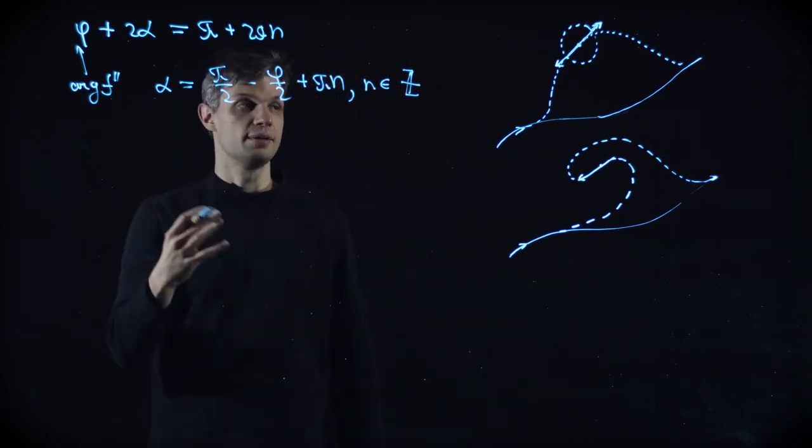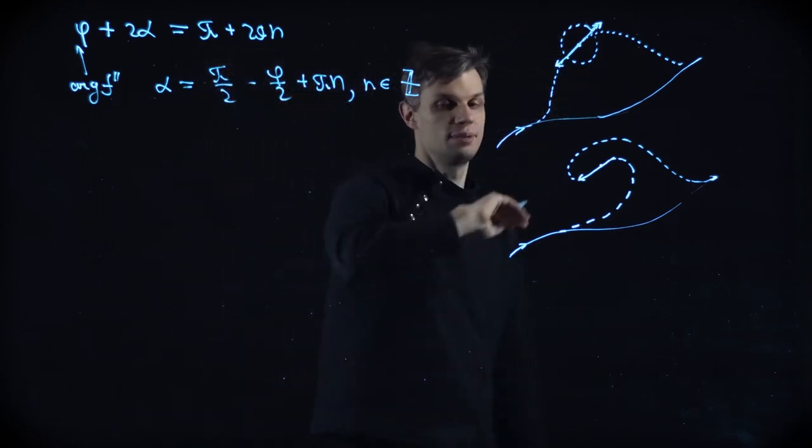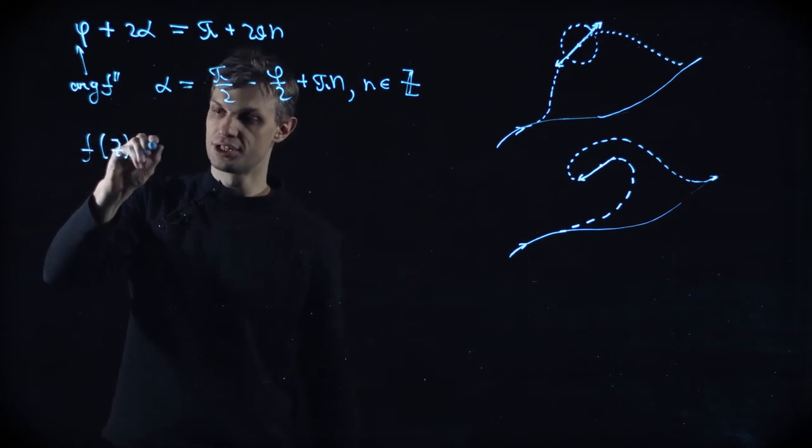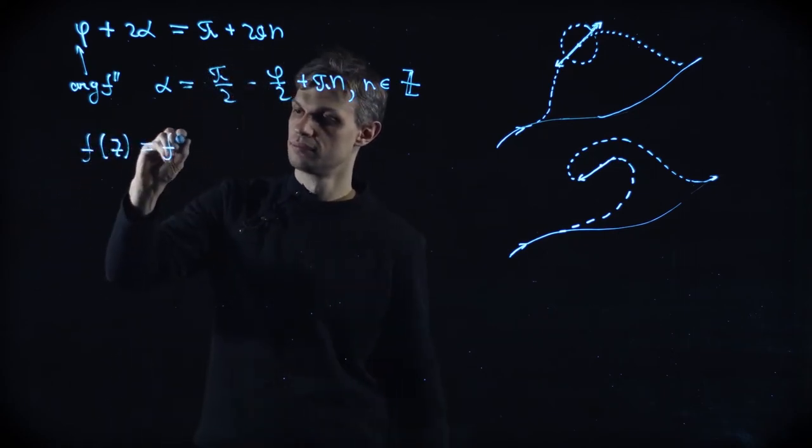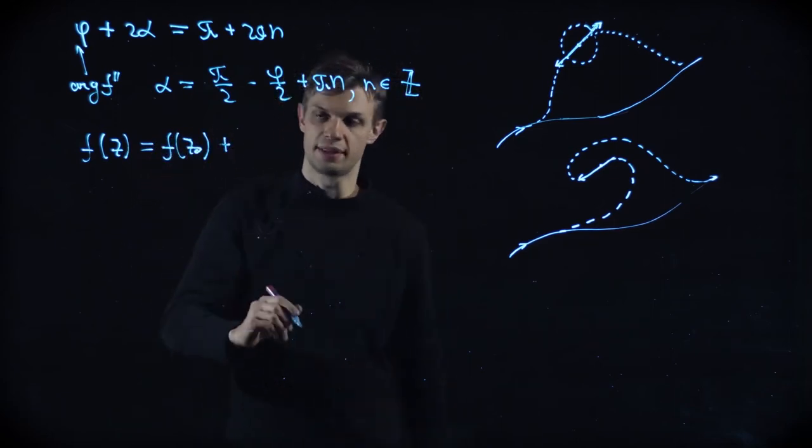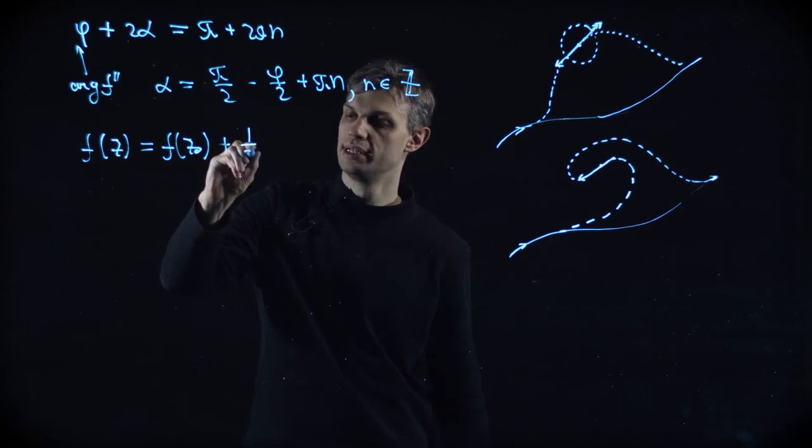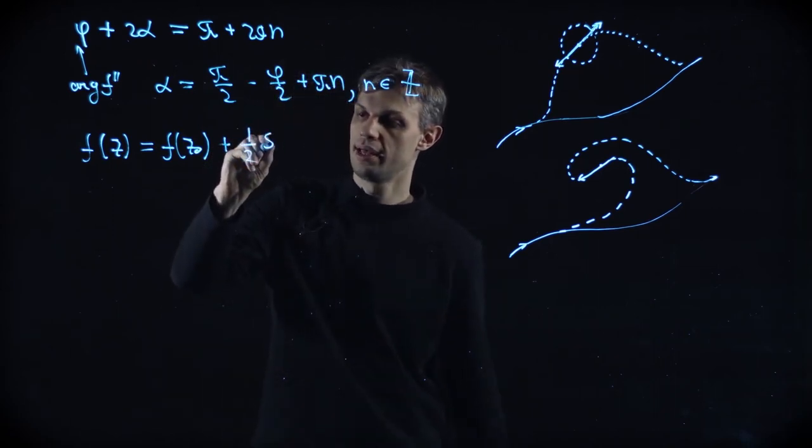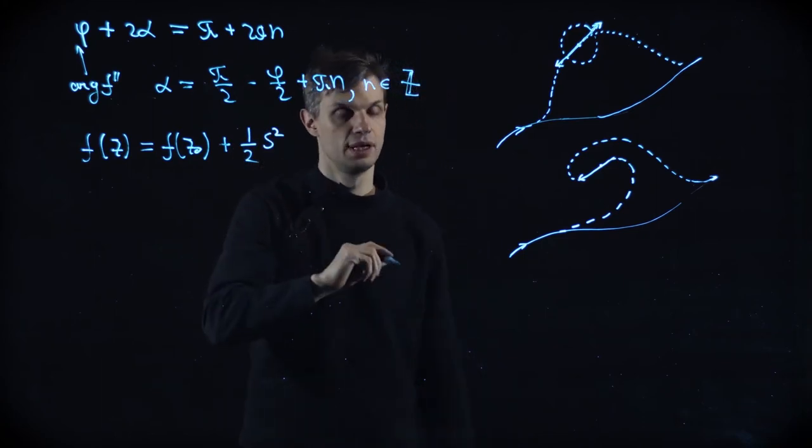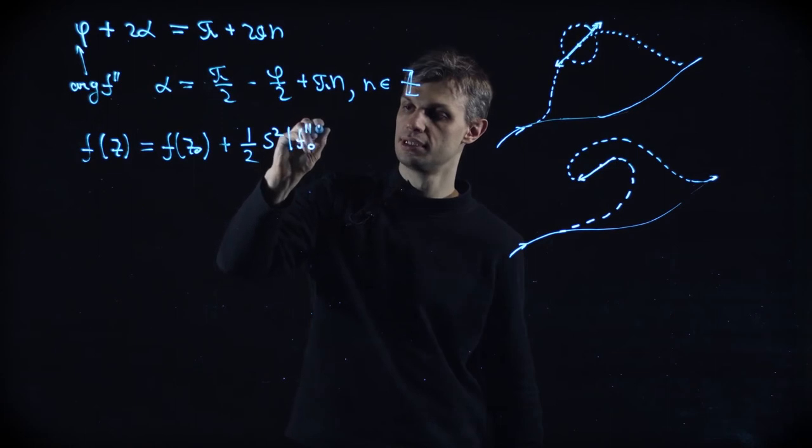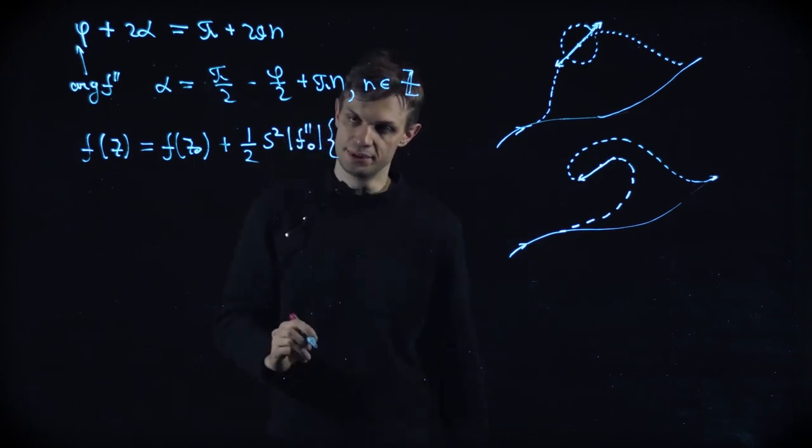Well, at least we can find them locally in the vicinity of the saddle point. So what we do is we write down the expansion of our f function again. As you remember, it looks like this. That's one half s squared modulus of f prime prime node.